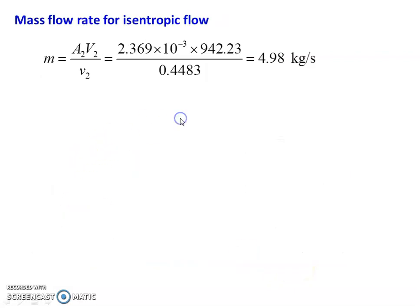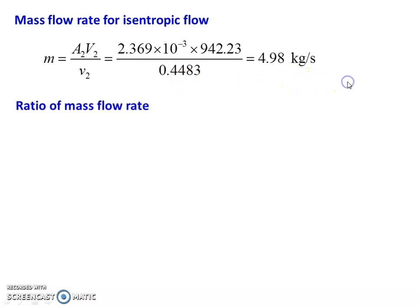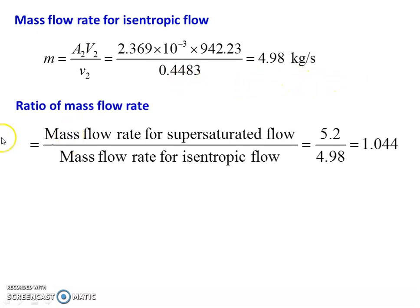Mass flow rate for isentropic flow: M = A2 × V2 / v2 = 2.369 × 10⁻³ × 942.23 / 0.4483 = 4.98 kg/s. Ratio of mass flow rate for supersaturated flow to isentropic flow = 5.2 / 4.98 = 1.044. These are all the answers to the problem.